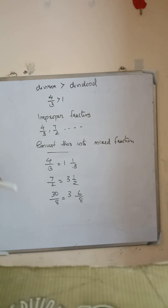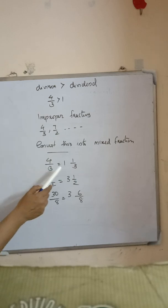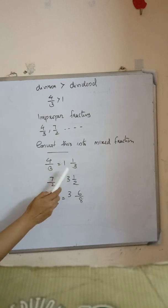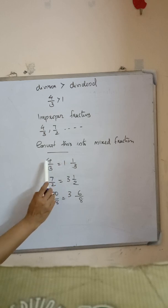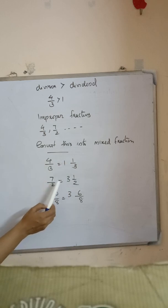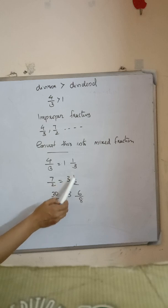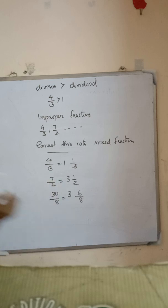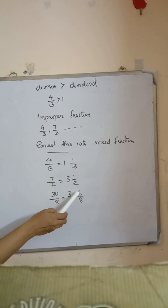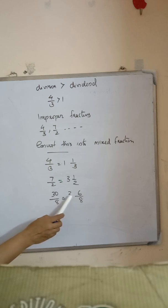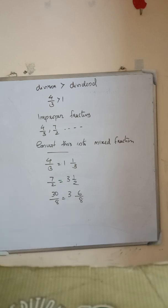We can convert an improper fraction into a mixed fraction. 4 by 3 equals 1 and 1 by 3, because 3 times 1 plus 1 is 4. Also, 7 by 2 can be expressed as 3 and a half, since 3 times 2 is 6 and 6 plus 1 is 7. And 30 by 8 can be expressed as 3 and 6 by 8, since 8 times 3 is 24 and 24 plus 6 is 30.